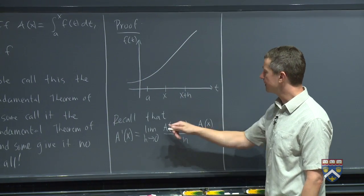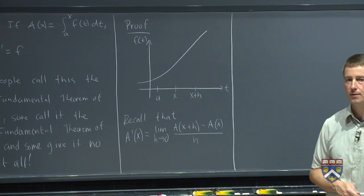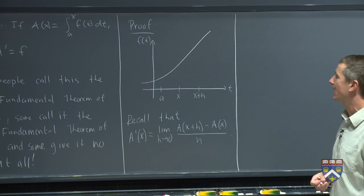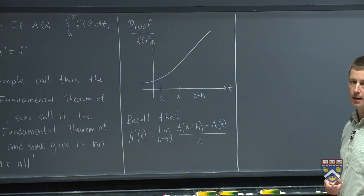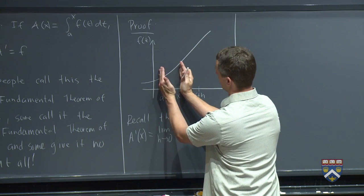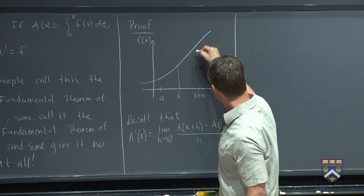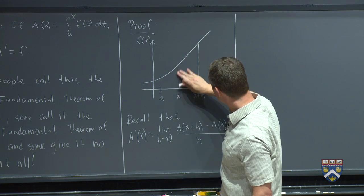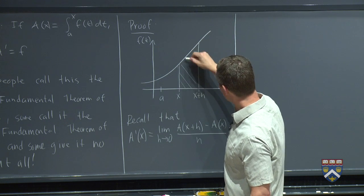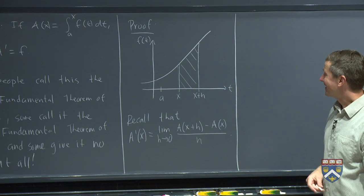So what is this quantity, the top part of this fraction, in this picture? See if you can figure out what I should draw to represent a of x plus h minus a of x in this picture. a of x plus h is this entire area. a of x is this area. Therefore, that region between there and there is a of x plus h minus a of x.